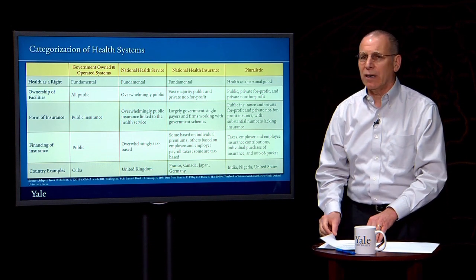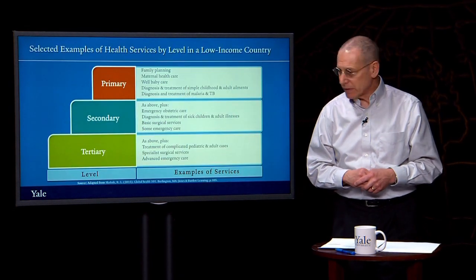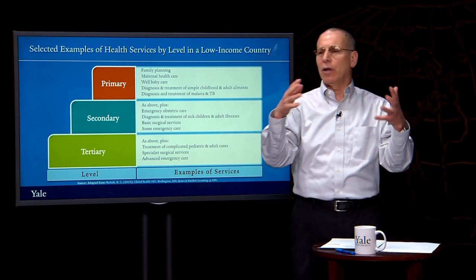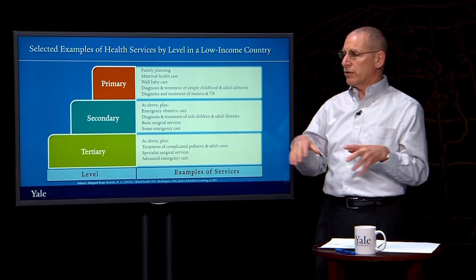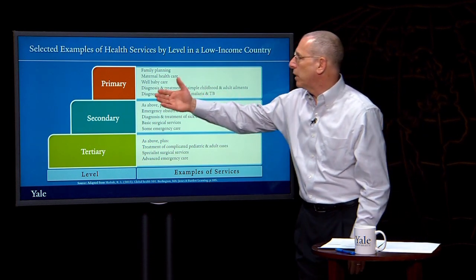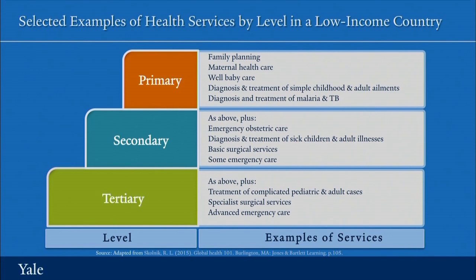Those working in health should also understand that health systems have traditionally been organized into several different levels. Usually we talk about the lowest level — the level closest to the client — as the level of primary health care. Especially when thinking about low- and middle-income countries, some services offered at the primary health care level include family planning, maternal health care, well baby care, the diagnosis and treatment of simple conditions, and the diagnosis and treatment of malaria and TB where these are prevalent.